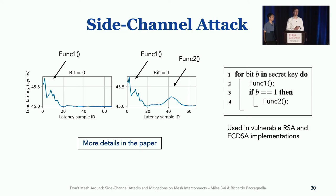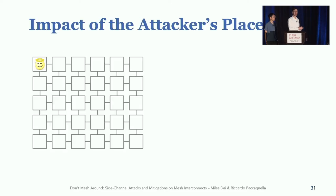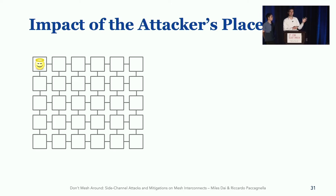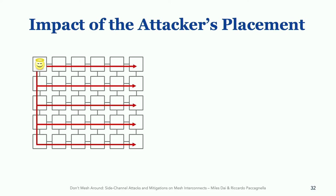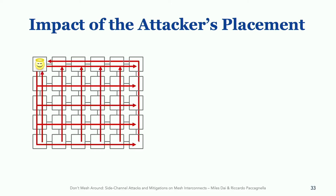We are going to focus on another important aspect that provides new insights on interconnect side channel attacks: the attacker's placement — which is also important for mitigations. Consider a scenario where the victim runs on the top left corner of the processor. During the victim's execution, we expect to see traffic into and out of every slice, due to the way that the slice hash function is designed on modern Intel processors.